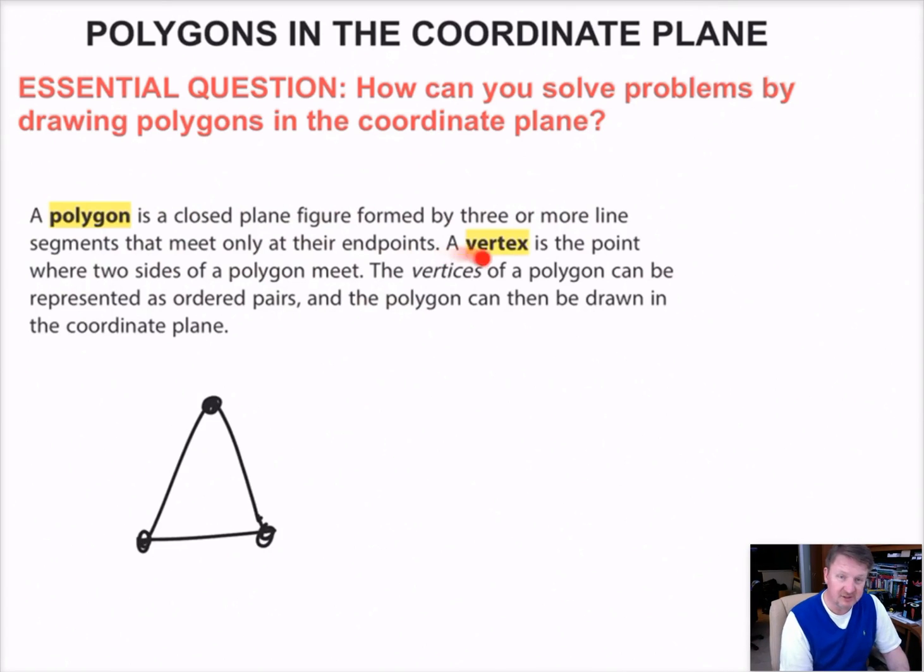Then it goes on to say a vertex is the point where the two sides of a polygon meet. The vertices of a polygon can be represented as ordered pairs, and the polygon can be drawn in the coordinate plane. So this is a vertex. All three of these are vertices, and they can be represented by ordered pairs. So you can say zero, zero, and whatever, and you can call them points.